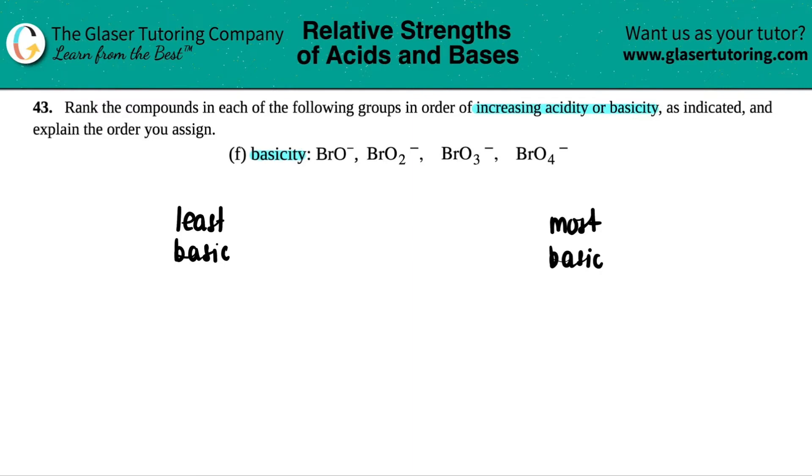Now, in terms of these anions, I see that I have a halogen, bromine, for all of them. And the only difference that I see here is the oxygens, right? I have one oxygen, two oxygens, three oxygens, four oxygens. So those oxygens must be why something is more or less basic, right?